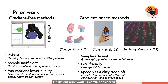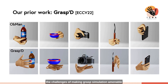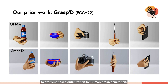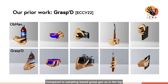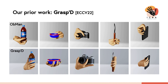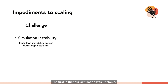Our prior work, Grasped, considered many contact points at the expense of speed. It focused on overcoming the challenges of making grasp simulation amenable to gradient-based optimization for human grasp generation. Compared to sampling-based grasp generation, as shown in the top row, this led to higher-quality conformal grasps, but it wasn't scalable and would take around 5,000 GPU hours to find a dataset of 1 million grasps. This lack of performance comes down to two main factors.